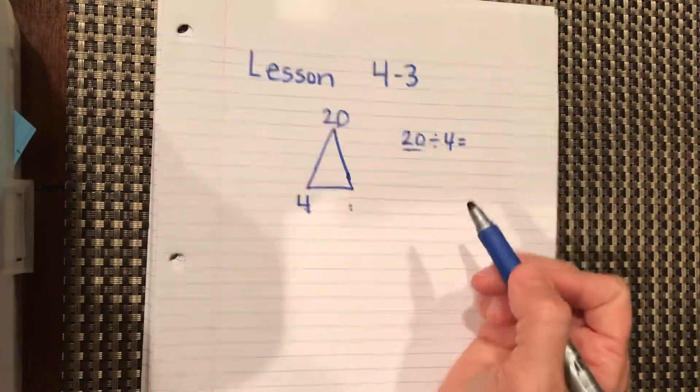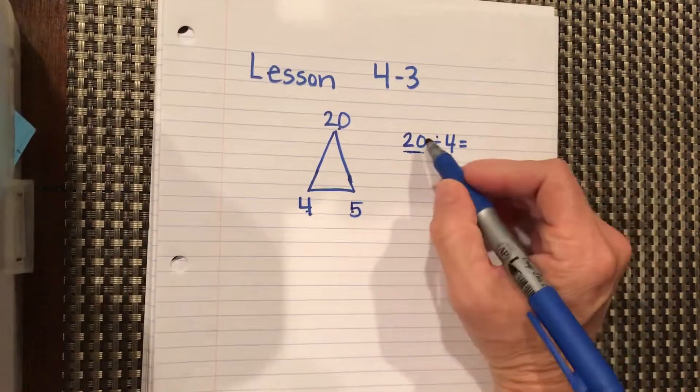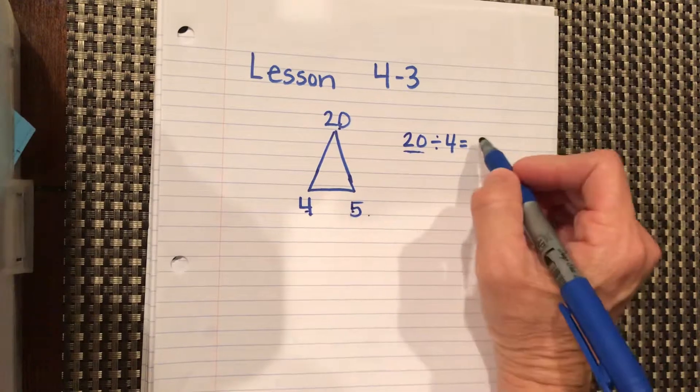So we think to ourselves, 4 times what equals 20, which is 5, right? So we know that 20 divided by 4 equals 5.